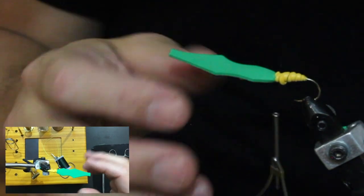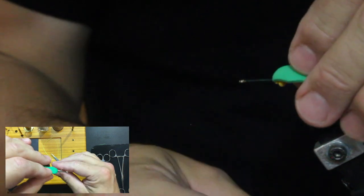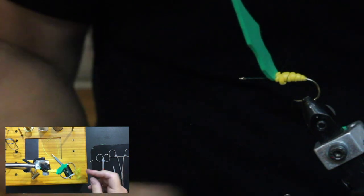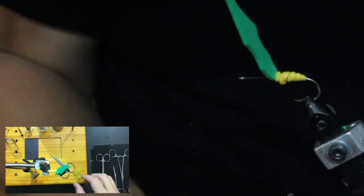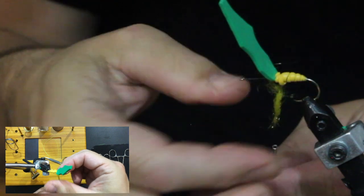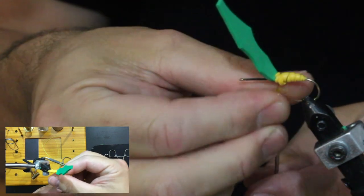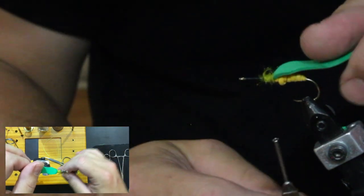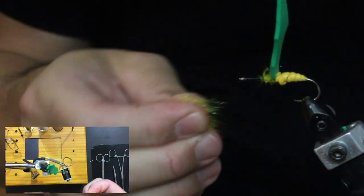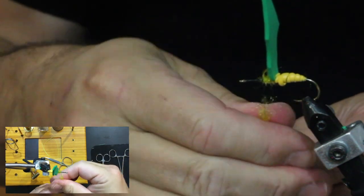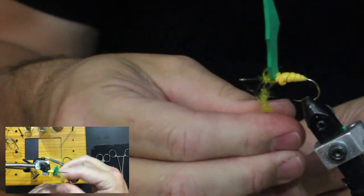Next thing we want to do is work on the body some more. I'm going to pull this back and get some dubbing. Get it a little wet, always twisting in one direction. Get it to where it grabs, slide it up, pull this back, give it a couple wraps. Take it down and do the same thing again.